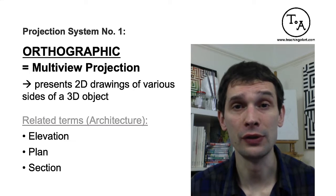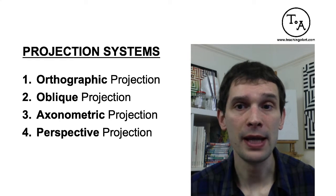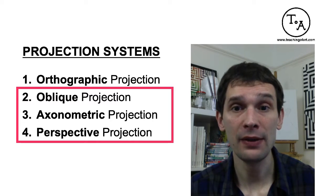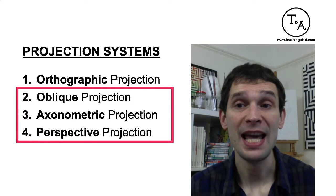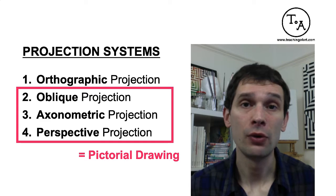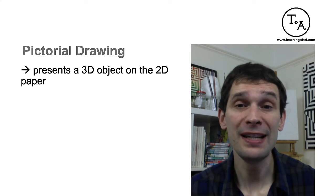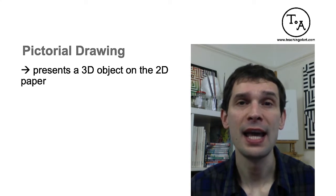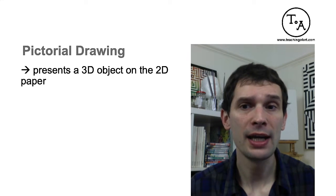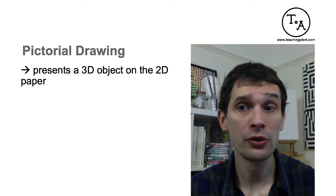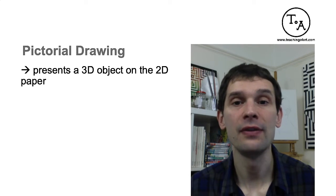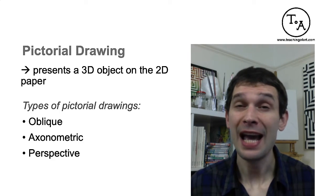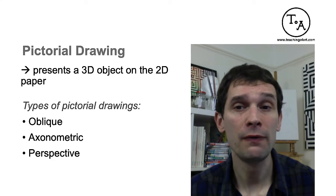Now let's go back to our projection systems overview. So far I've explained orthographic projection, and the other three — oblique, axonometric, and perspective projections — are sometimes referred to as pictorial drawings. A pictorial drawing represents a three-dimensional object on two-dimensional paper. In other words, the pictorial drawing shows that the object has depth. A two-dimensional object has height and width; a three-dimensional object has height, width, and depth. It creates the feeling of space in our drawing, and the aim of a pictorial drawing is to help you visualize a 3D object.